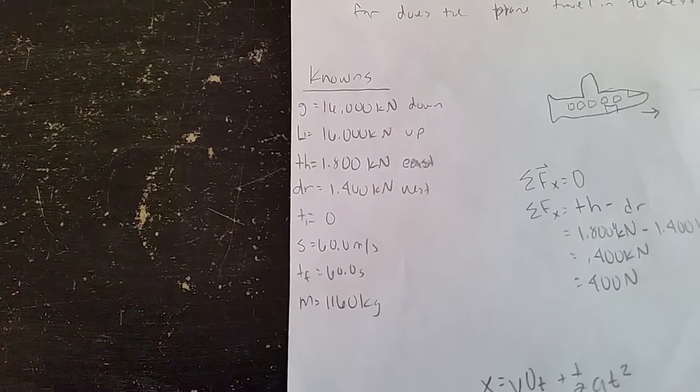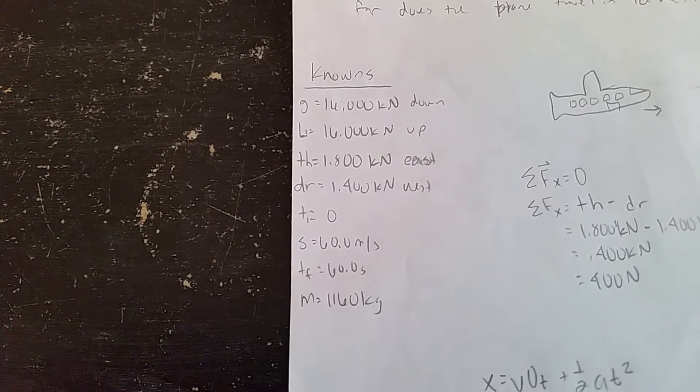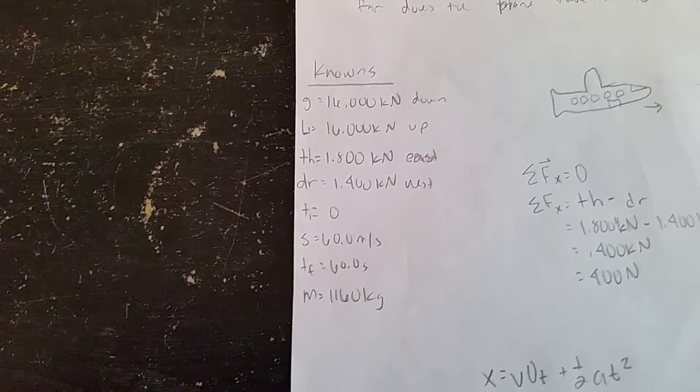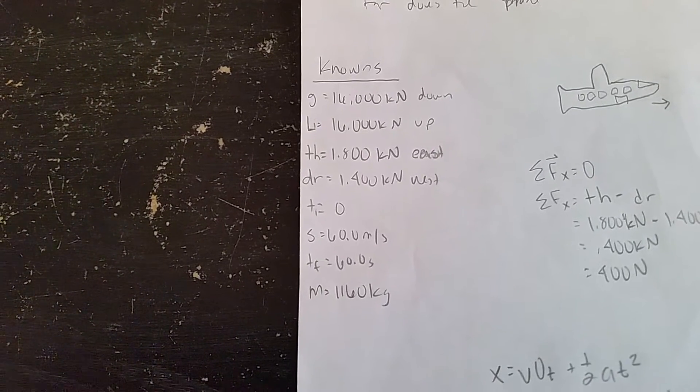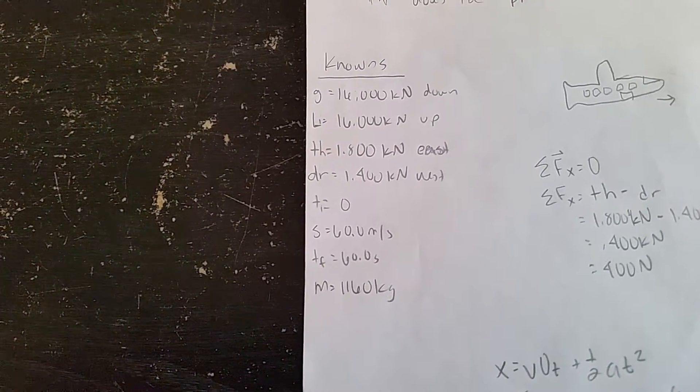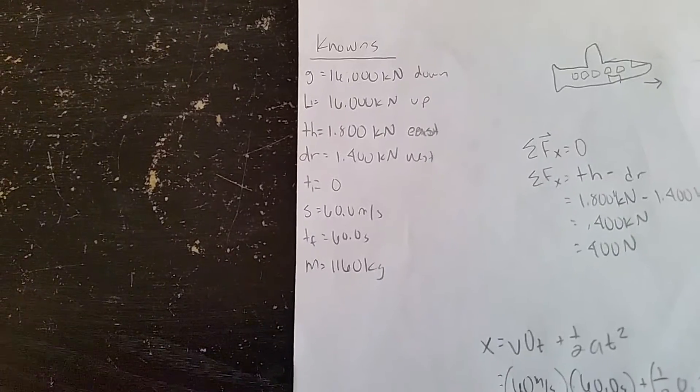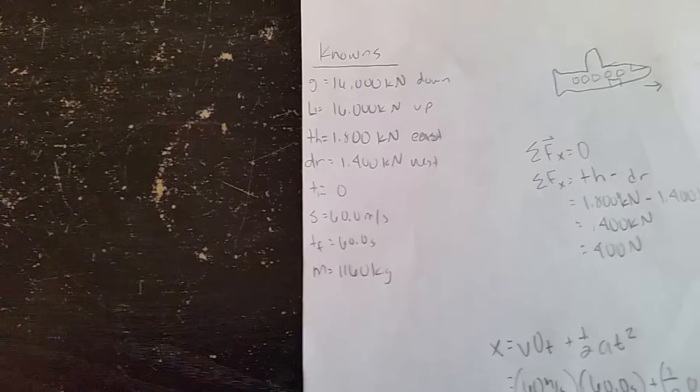Initial time zero, speed 60.0 or initial velocity 60.0 meters per second, final time 60 seconds, and the mass of the airplane is 1,160 kilograms.